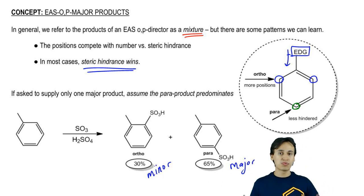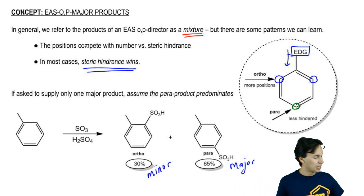Basically, that's going to be the rule that we always follow. We're going to say that para wins out over ortho if asked to supply one major product. Now, there is one noted exception.